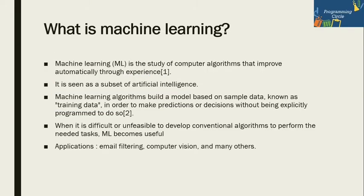So what is machine learning? Machine learning is the study of computer algorithms that improve automatically through experience. Experience is an important term because through experience only the machine learns, and the better it learns, the better it predicts. The main intention of machine learning algorithms is to predict better.